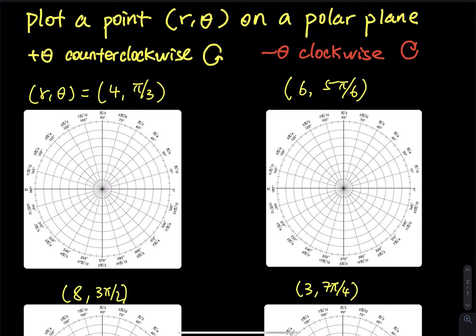In this video, I will show you how to put a point on a polar plane. At this moment we are using polar coordinates. Polar coordinate is no longer x comma y — polar coordinate is r comma theta.